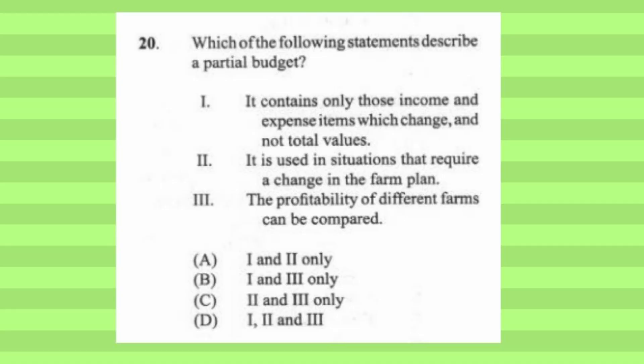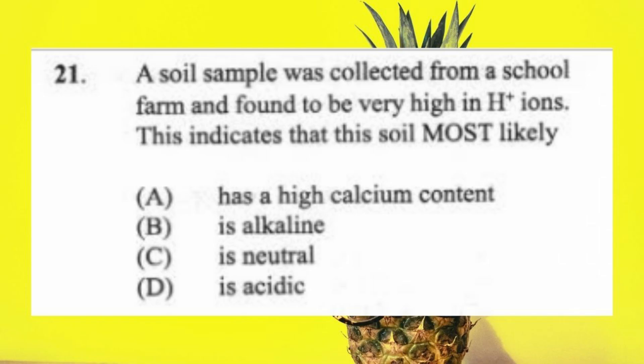Question 20: Which of the following statements describe a partial budget? (1) It contains only those items of expenditure which change and not total values. (2) It is used in situations that require a change in the farm plan. (3) The profitability of different farms can be compared. The answer is A, one and two only.